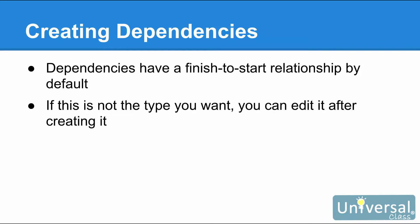If you want a finish-to-start dependency, then your life just got a whole lot easier. If it's not the type you want, after you create the dependency link you can edit it to change the type, or build in lag or lead time — essentially time in between the pair of tasks.